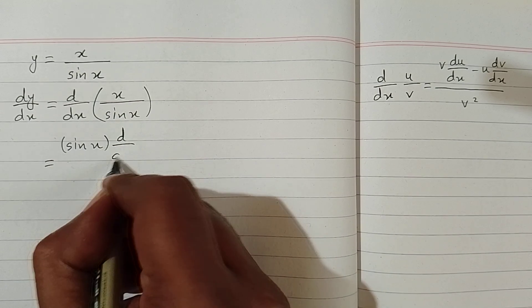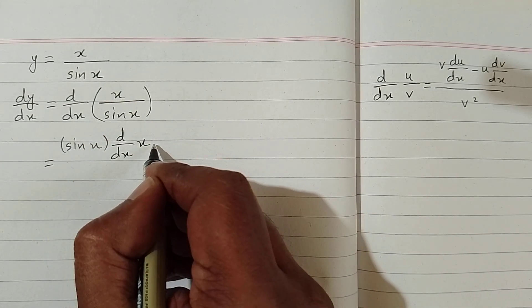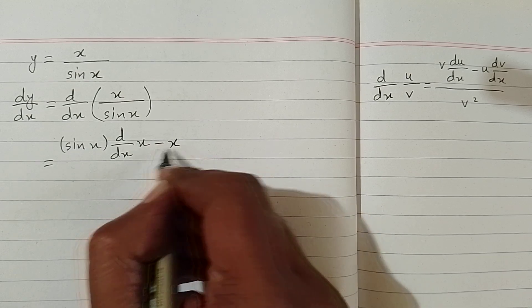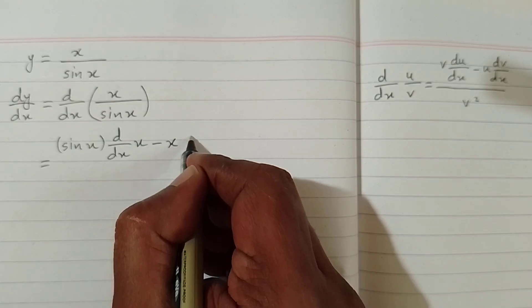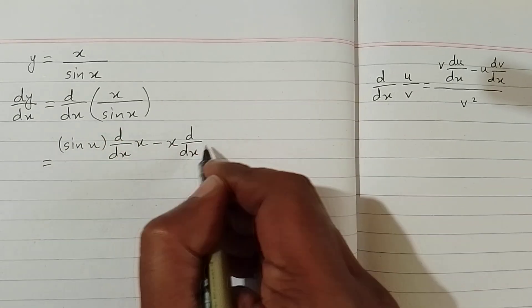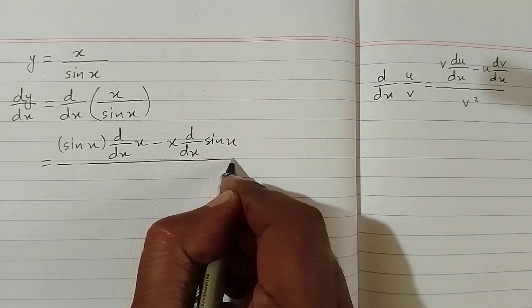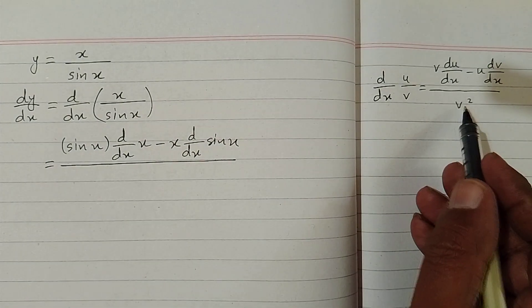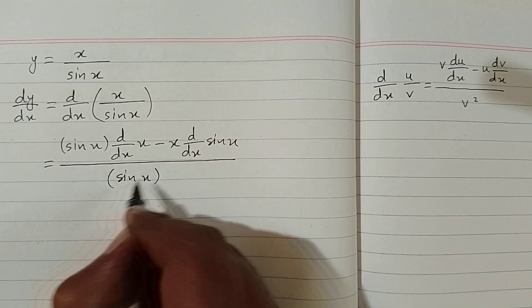So we can write dy/dx of x because we have x in place of u, then minus u, that is minus x multiplied by the derivative of v. So we can take the derivative of v—v is sin x—and in the denominator we have v squared, so we can write square of sin x.